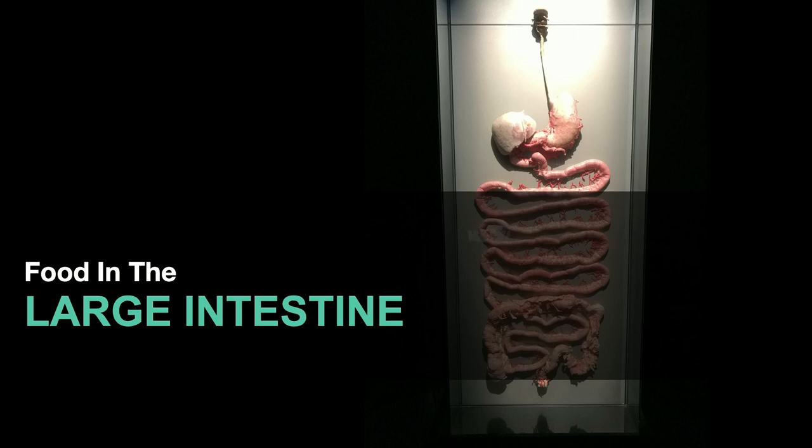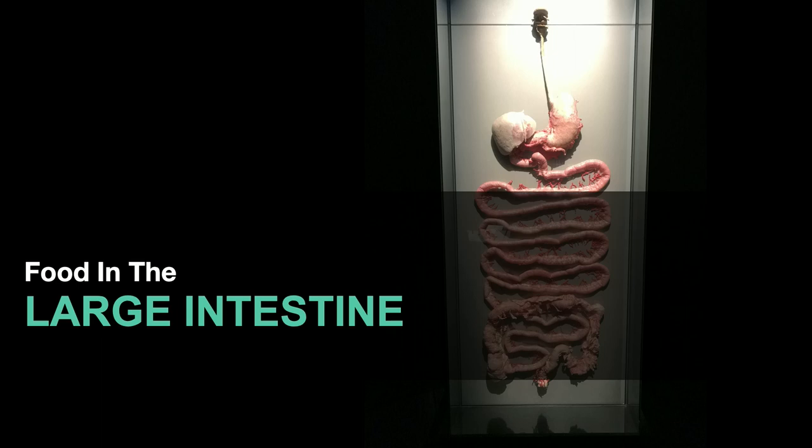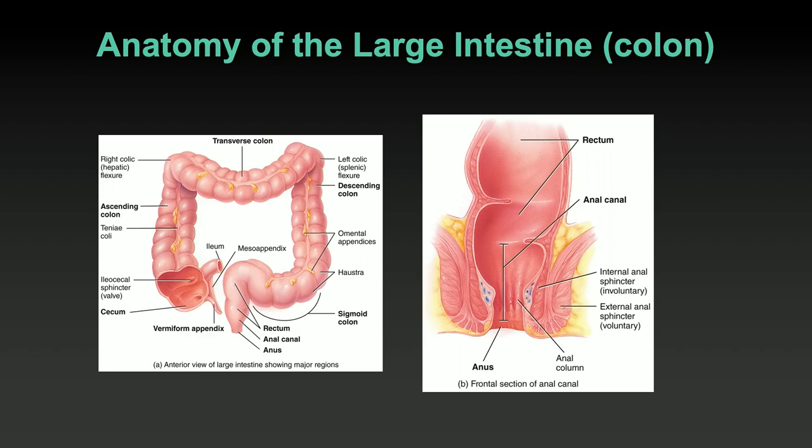Food in the large intestine — largely storage and expulsion of feces, that's the job. There are some vitamins synthesized here and some absorption of salts, but not a lot of action. Chyme from the small intestine has mostly been reduced — everything absorbed, leaving the shriveled husk of the food you once ate, whether that was a turkey dinner, pizza, or a bag of Oreos. That waste is to be excreted.